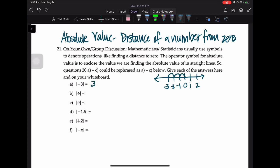Well how far is four? Well, if I extended my number line, four is four away from zero. Zero is zero away from zero. Negative 1.5 is 1.5 away from zero. 4.2 is 4.2 away from zero.